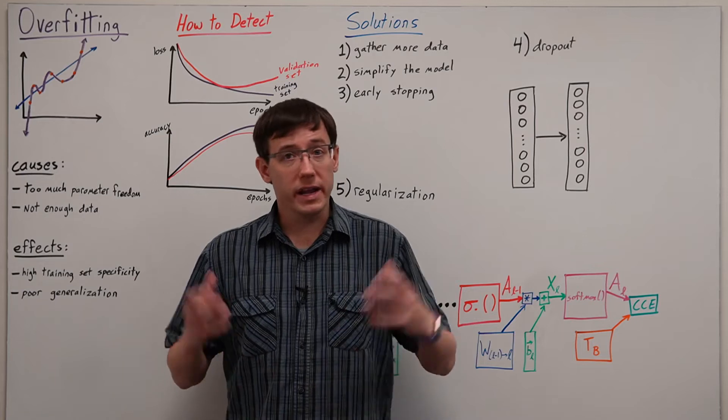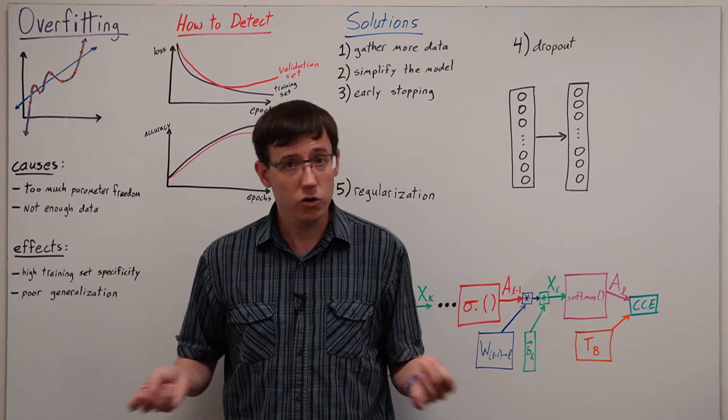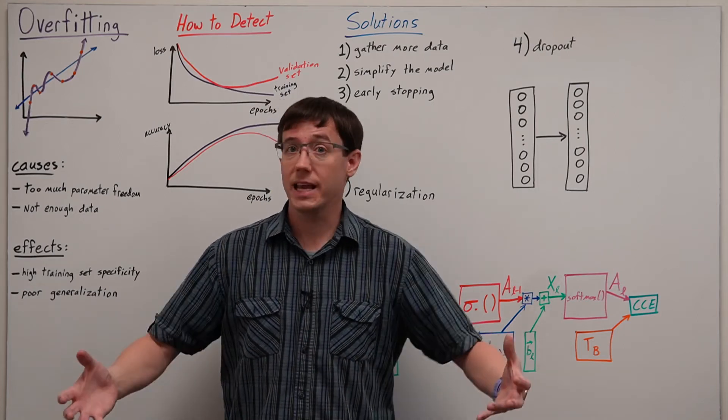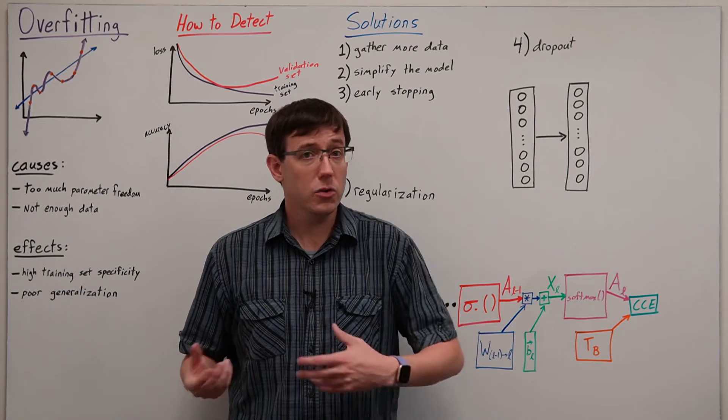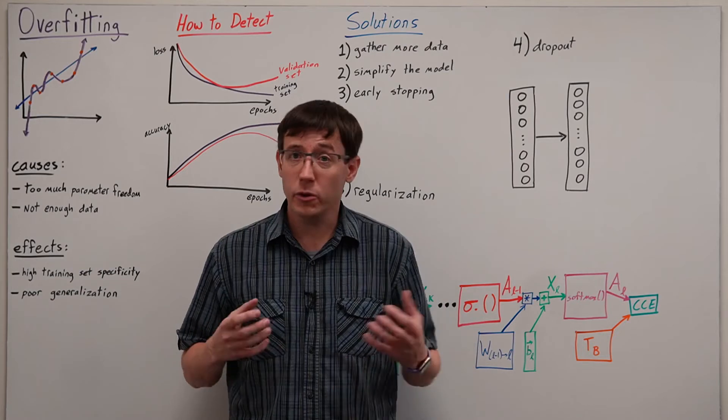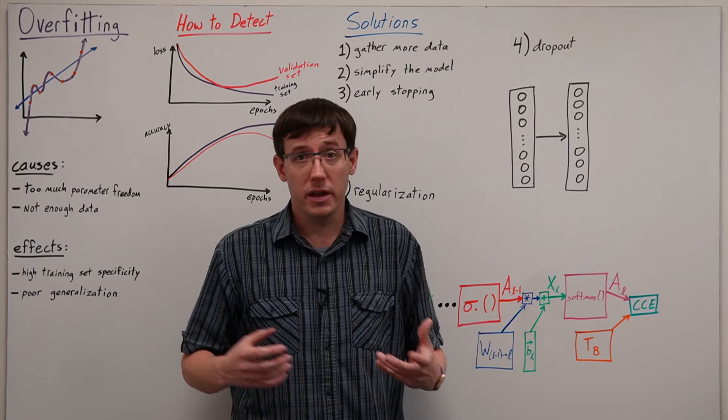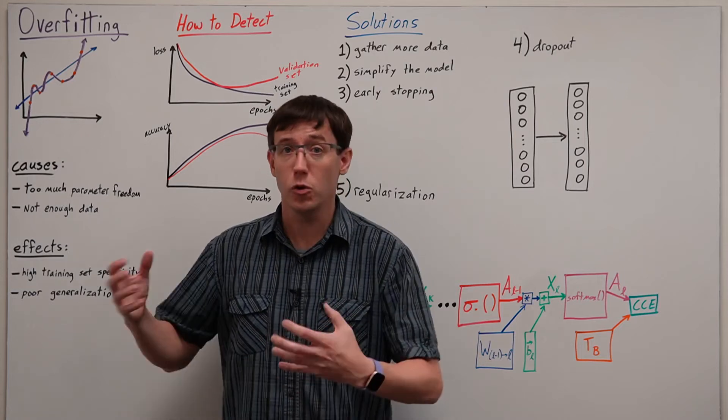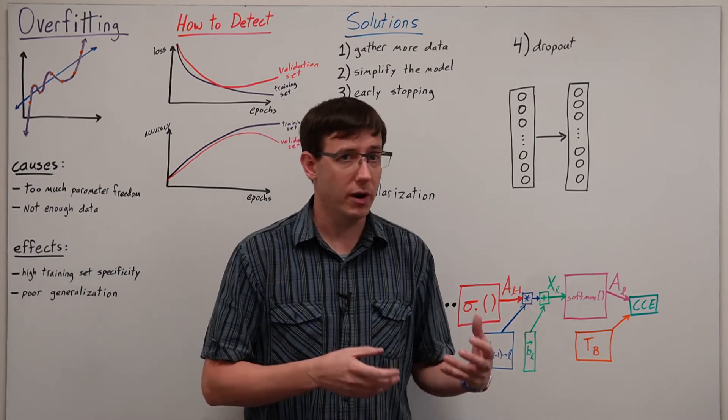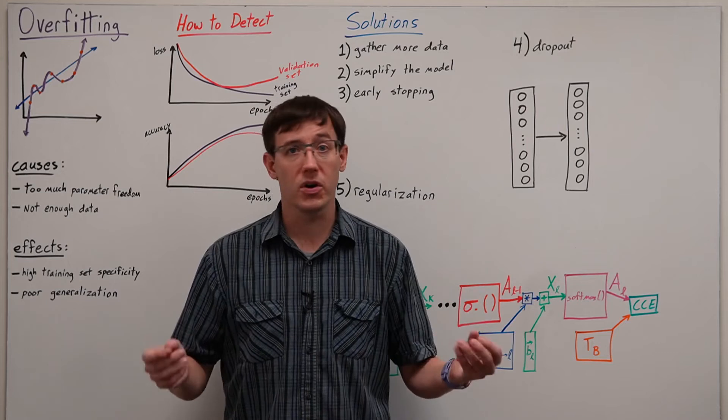In particular, if we are training a very large neural network on a not very large data set, we shouldn't expect good results. And if we can't scale up the data set, we should think about scaling down the model. In addition to combating overfitting, reducing the size of our network can also pay huge dividends in terms of efficiency. And so if we are compute-limited, it's important not to pick too big of a network. And so the general rule of thumb is that you should choose the neural network architecture that's just big enough to solve your particular problem.